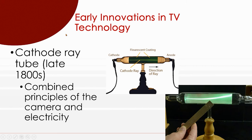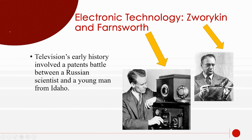Back in the 1800s, something called the cathode ray tube combined the idea of the camera with electricity. Before, images were put onto film, but they asked: what if we use electricity? The cathode ray tube really started everything going with television. Two scientists — Zworykin and Farnsworth — were battling it out to get patents for the idea of television, and both are considered the fathers of television.